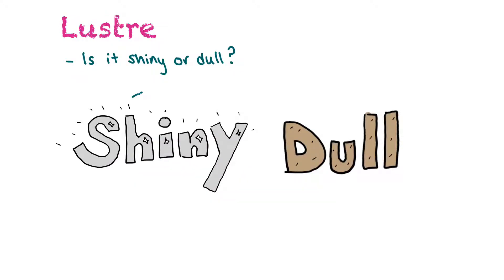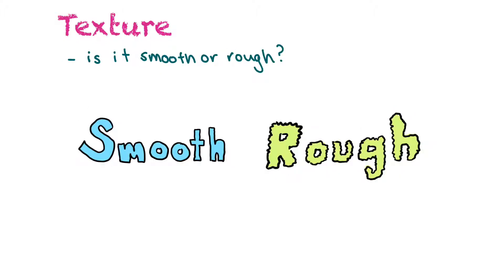Luster describes whether or not something is shiny or dull. In this example, one item is shiny and another is dull, so that describes the luster of a substance. Texture describes how it feels — is the thing smooth or rough? That's another way of describing a physical characteristic of matter.